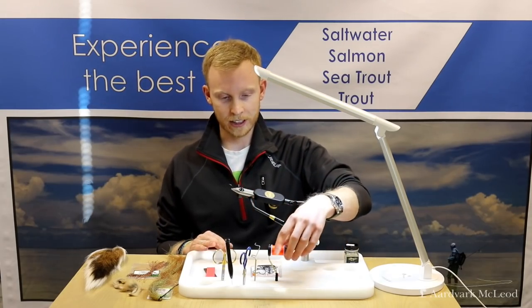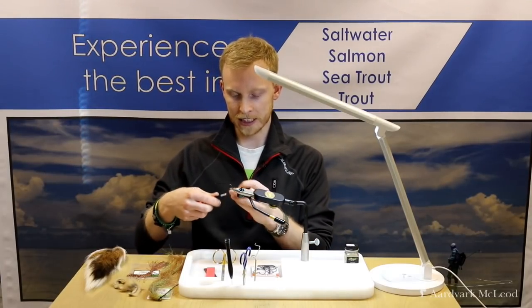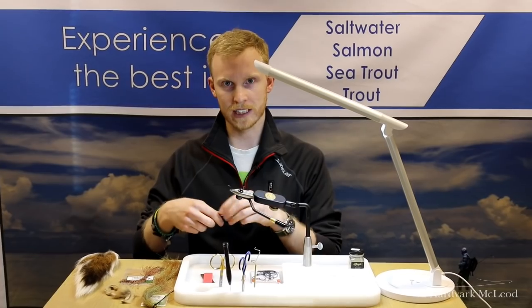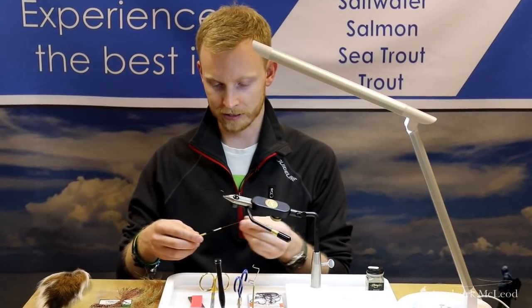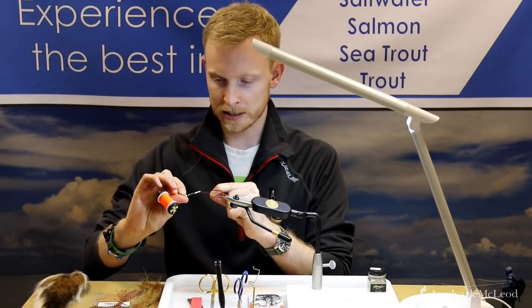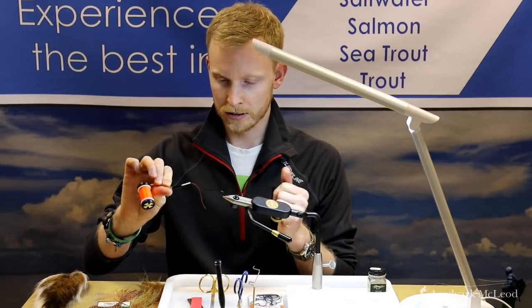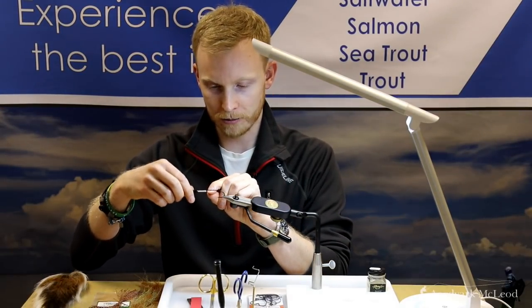Starting the gurgler, we'll take our nice heavy heavy-duty thread here. We want this to be able to really strap down the material so they're not going to come out of place on the first fish that we hook. This is an 8.0 Vivas thread, really strong, bright orange. I quite like that as a hot spot for the fly when we're fishing it.